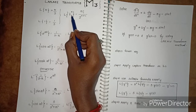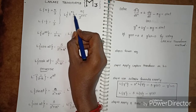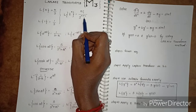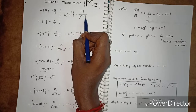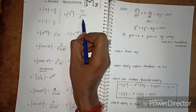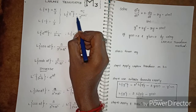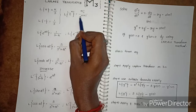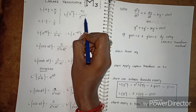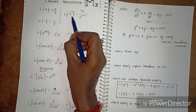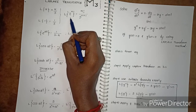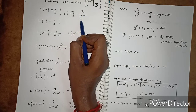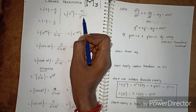Next: L of t power n. The function L of t^n is equal to n factorial by s power n plus 1. This is similar to integration — integrating x^n gives x^(n+1) in the denominator — same idea here. L of t^n equals n factorial by s^(n+1).